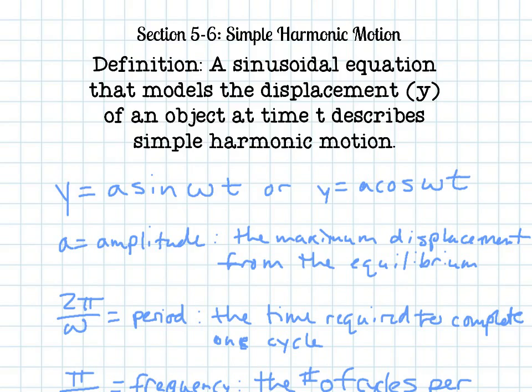Two equations that you'll use are y equals a sine of wt or y equals a cosine of wt. There will be vertical translation, but don't worry about having to write that part of the equation right now. We'll add that on.